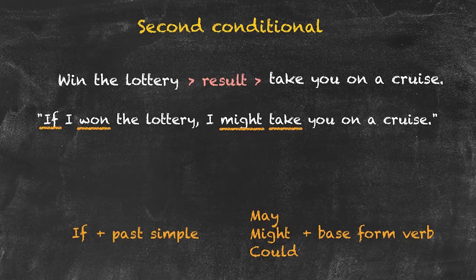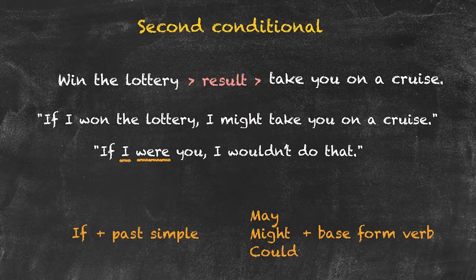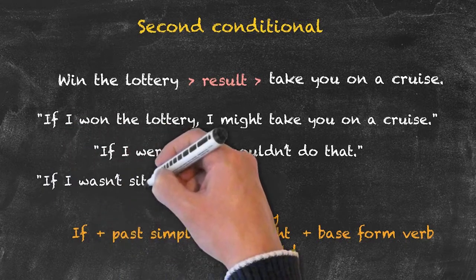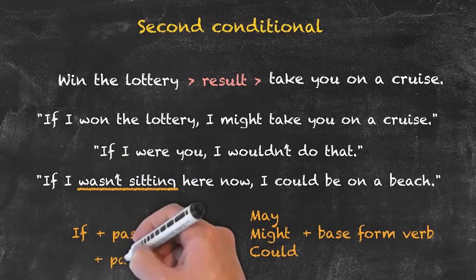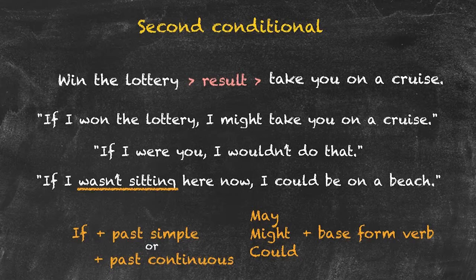There are a couple of changes that can be made to the structure with this conditional. 'If I were you, I wouldn't do that.' Notice it's still in the past simple, but with the pronoun 'I,' you would normally use 'was' — however, with the second conditional, 'were' is more typically used. Another teaching point: 'if I wasn't sitting here now, I could be on a beach' — here we're looking at past continuous. So the structure for the second conditional is: if + past simple or past continuous, then may/might/could + base form of the verb.